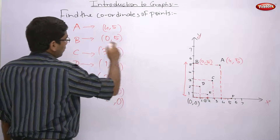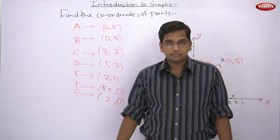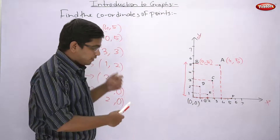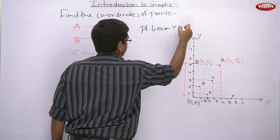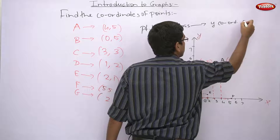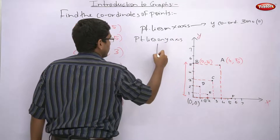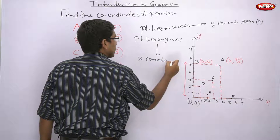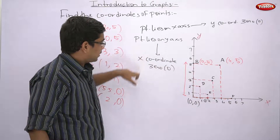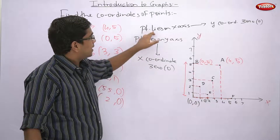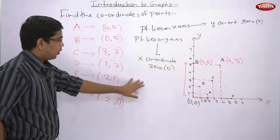For G: draw dotted line. G lies horizontally at 2, and since it's on the x-axis, y-coordinate is 0. So G's coordinates are (2, 0). Summary: A is (4,5), B is (0,5), C is (3,3), D is (1,2), E is (2,1), F is (5.5, 0), and G is (2, 0). Important rule: when a point lies on x-axis, its y-coordinate is 0; when a point lies on y-axis, its x-coordinate is 0.